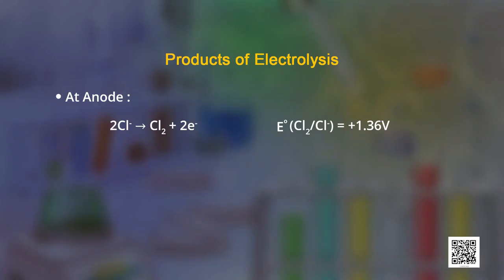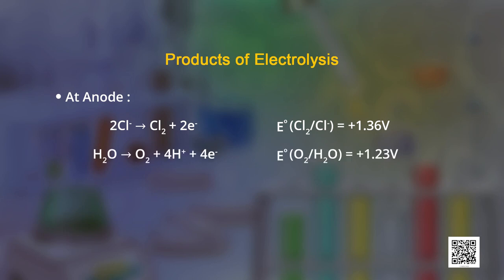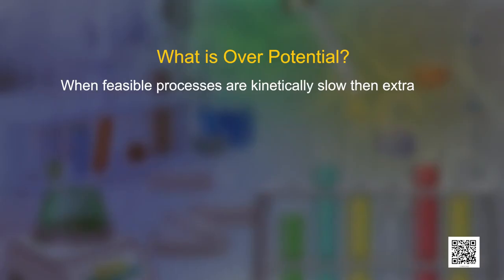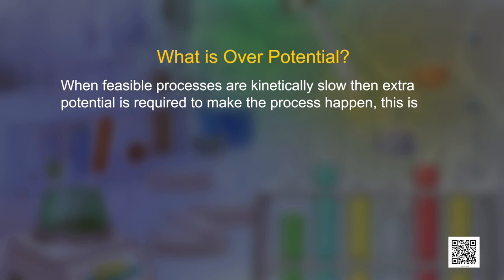Similarly, at the anode, there is a possibility of two oxidation reactions. Chloride ions undergo oxidation by losing electrons, with a reduction potential of 1.36 V, while for water it is 1.23 V. Since oxygen has a lower reduction electrode potential, it was supposed to be released at the anode. But due to the overpotential concept, chlorine gas is evolved at the anode while hydroxyl ions remain in the solution. Overpotential is the extra potential required when feasible processes are kinetically slow.